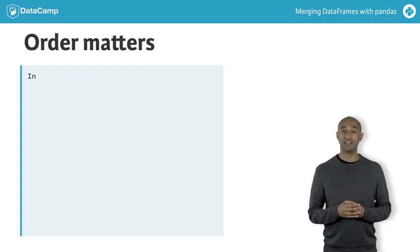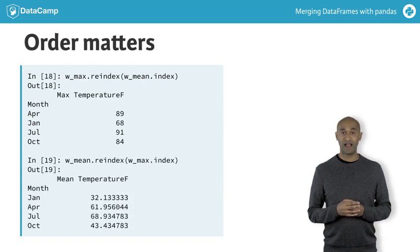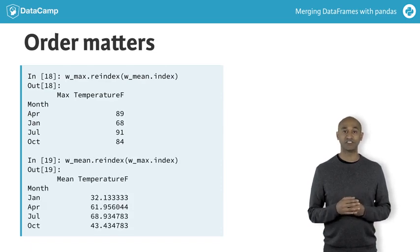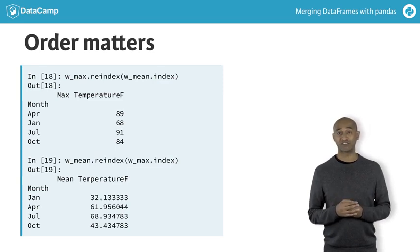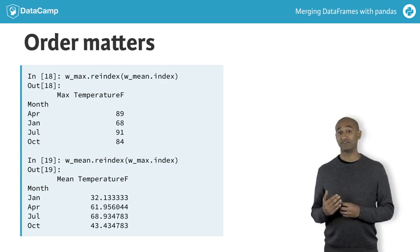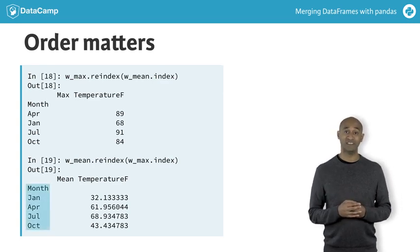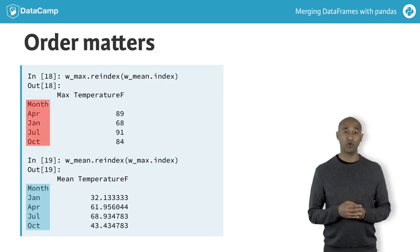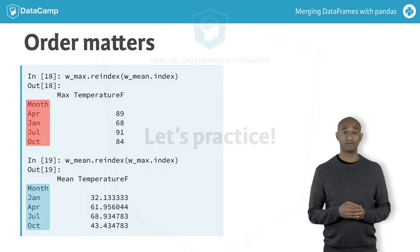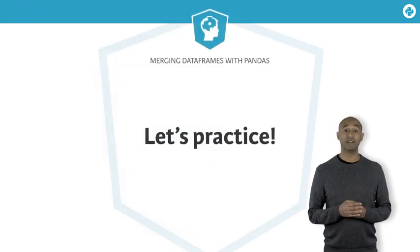Finally, we should realize that order counts. W_max.reindex(W_mean.index) is not the same as W_mean.reindex(W_max.index). The latter fixes the row order as desired in W_mean, while the former replicates the misleading alphabetical row order in W_max, which is likely not desired. Try reindexing data frames now in some of the exercises.